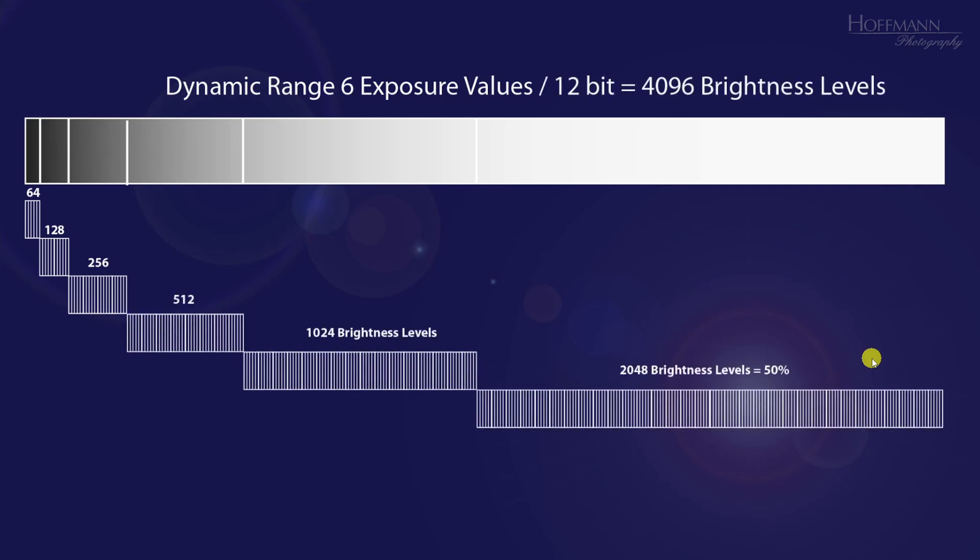In the case of a 12-bit image, we have a total of 4096 possible brightness levels. That means that the brightest tonal values can be divided into 2048 discrete levels. And that corresponds to exactly half of the total number of brightness levels. Let that sink in for a moment.